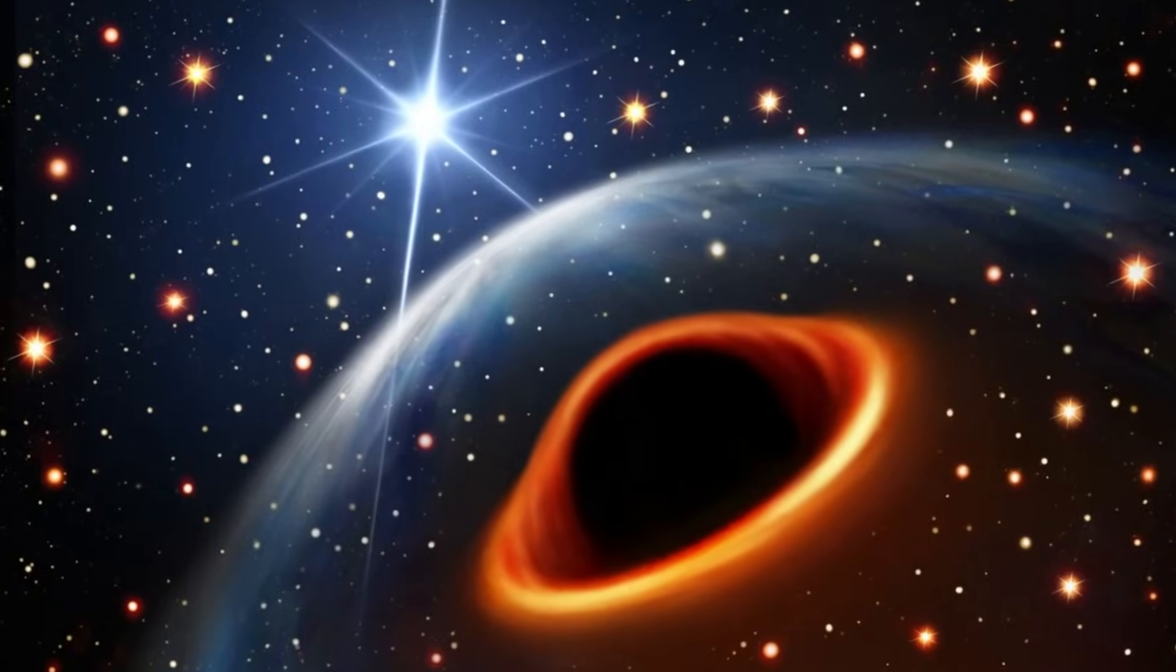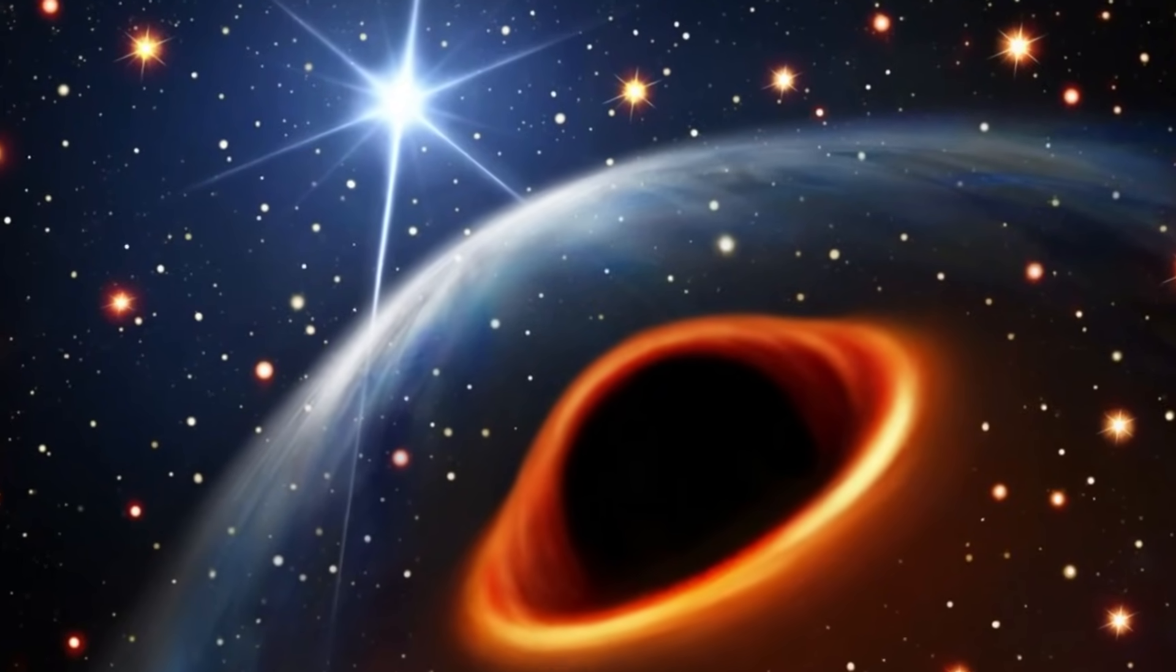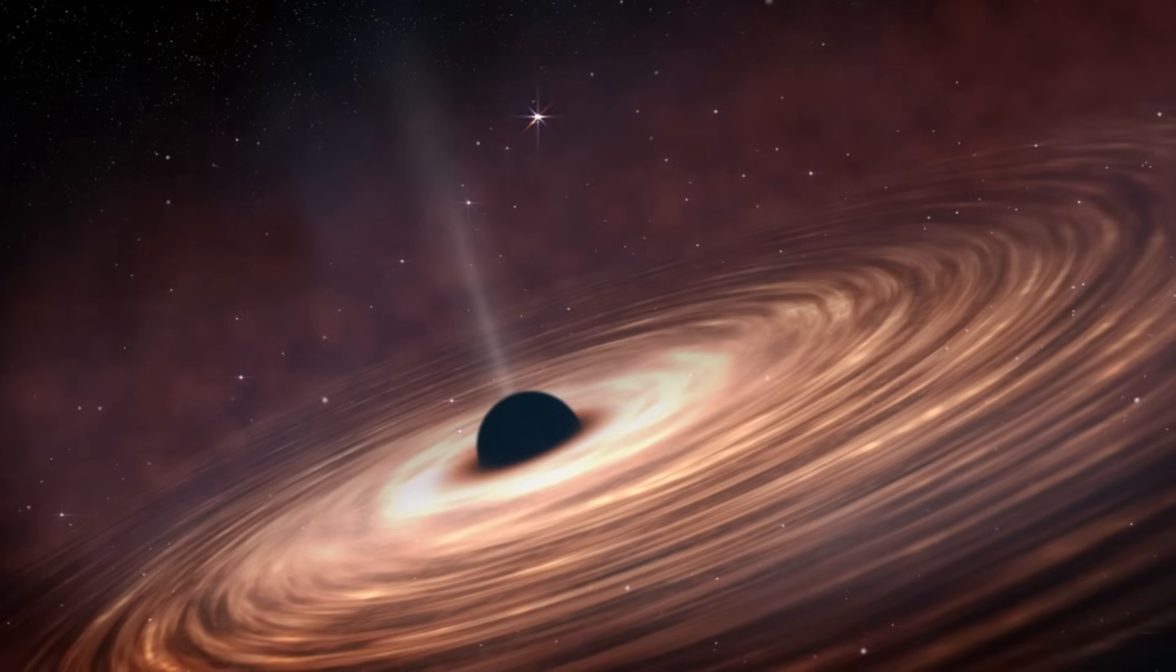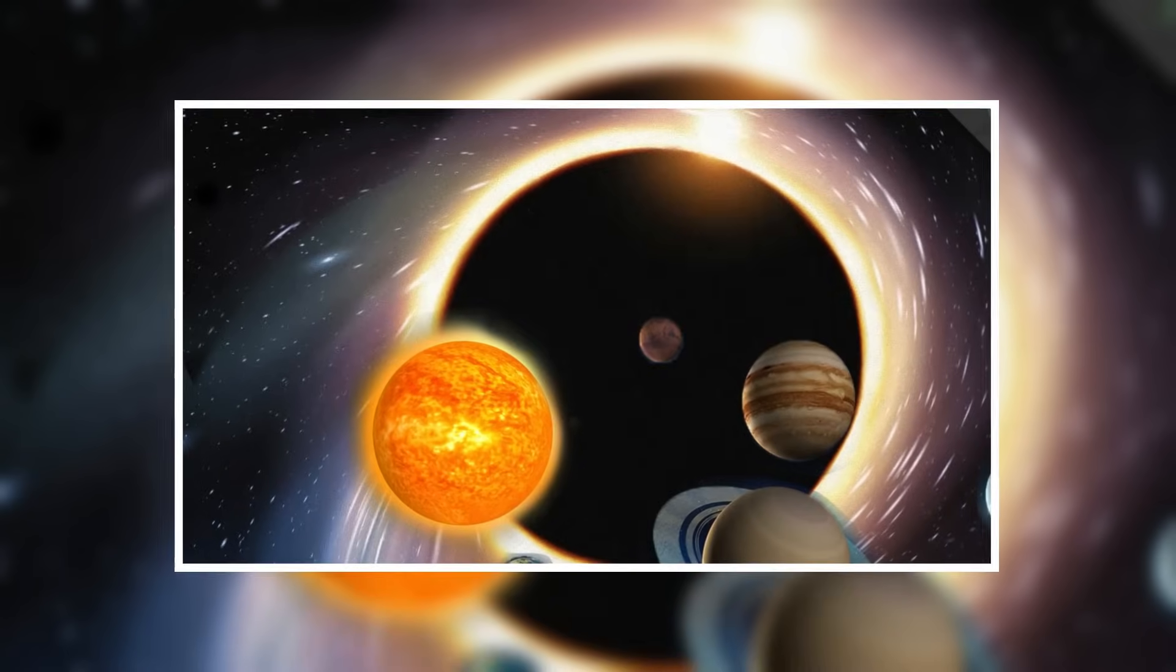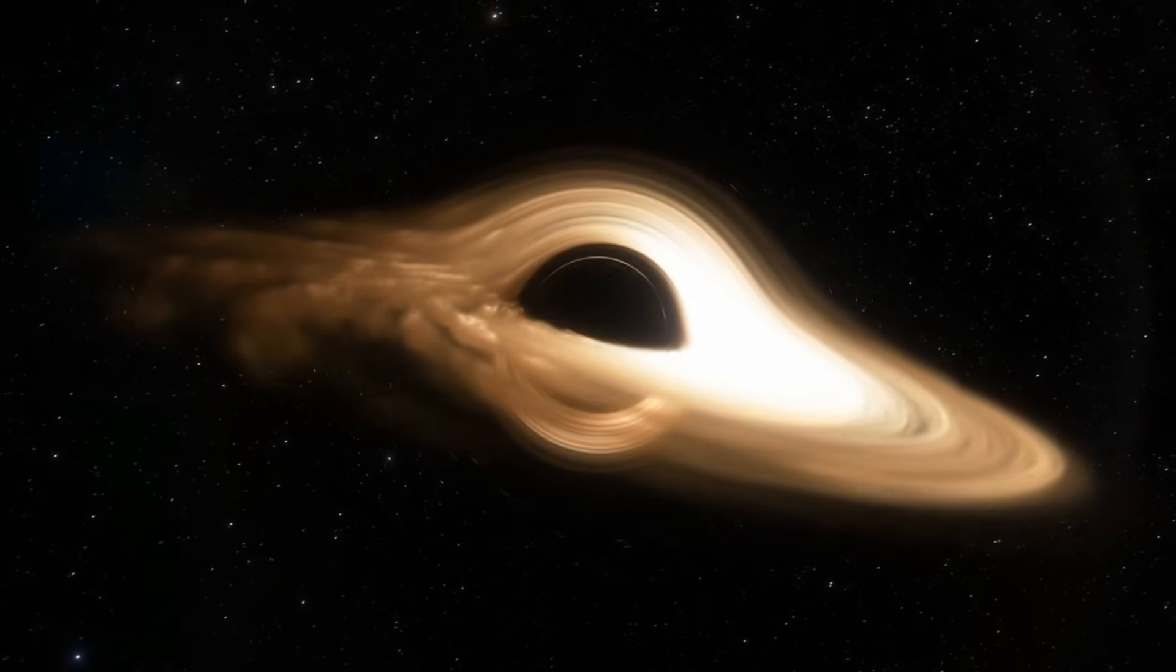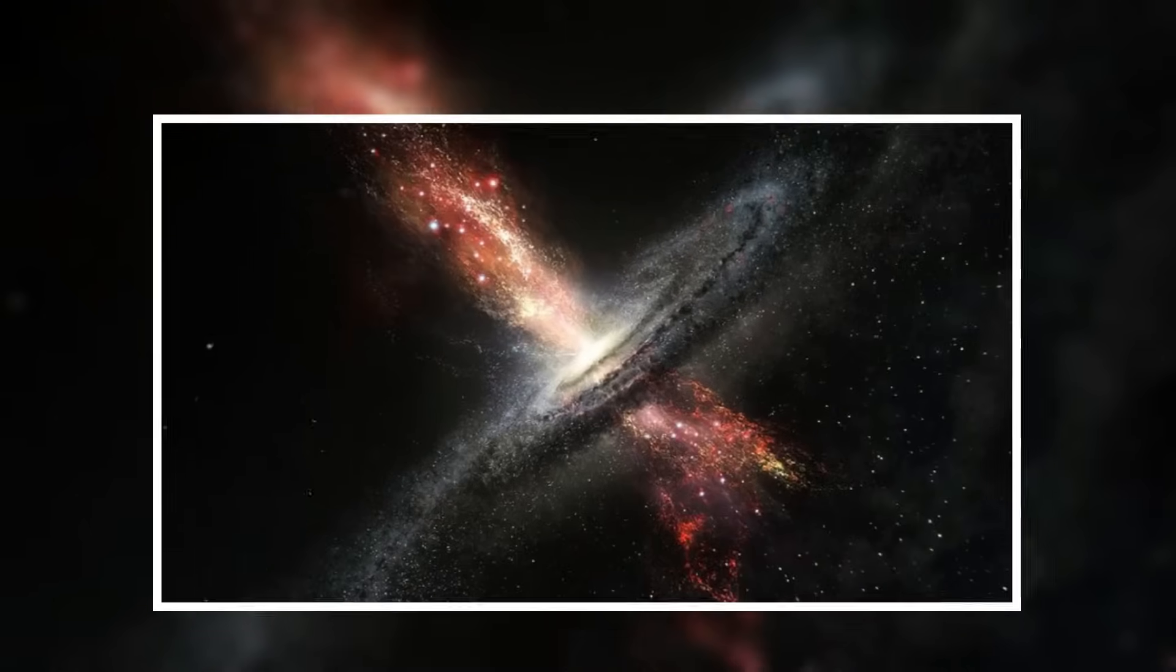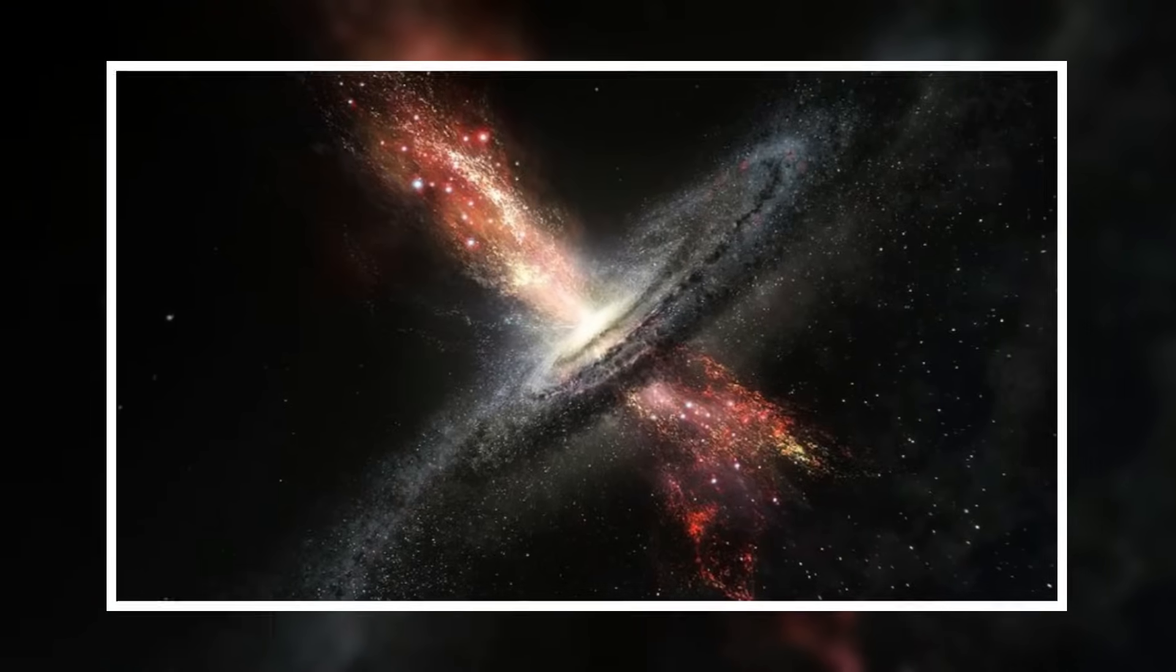The first type of black hole is one with the mass of a star. This group weighs between 1 and 100 times the sun's mass. The supermassive black holes are on the other end. They are millions or even billions of times heavier than the sun. Scientists think these were formed when huge stars died off in the early universe.